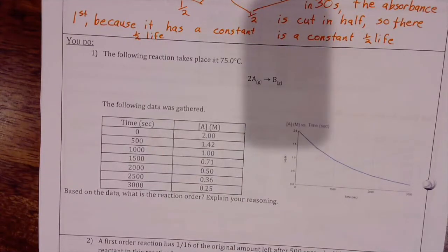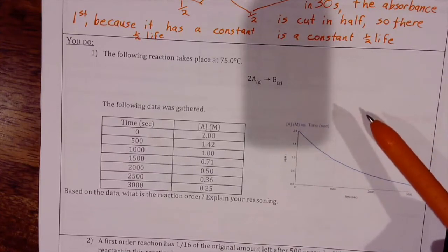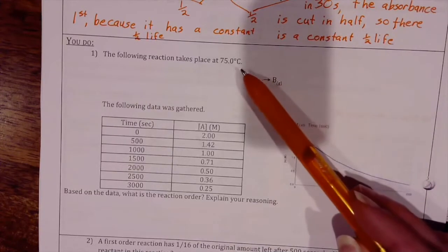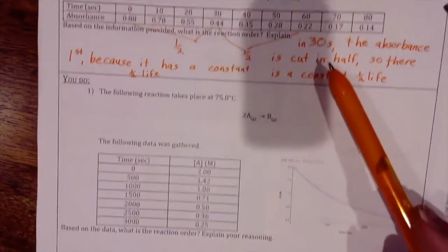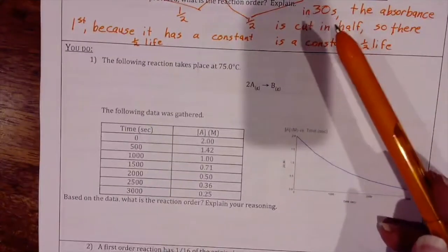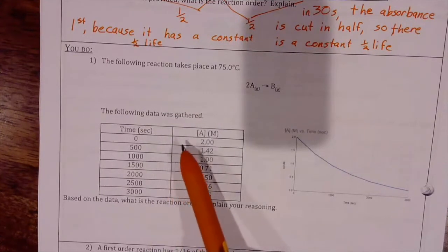Okay, so we're going to talk about integrated rate laws and do the integrated rate law practice problems. The first one, because we did the UDO together in class, is this one that tells us this reaction takes place at 75 degrees Celsius, and this data is gathered.